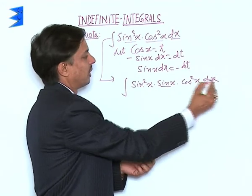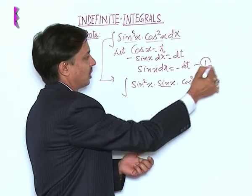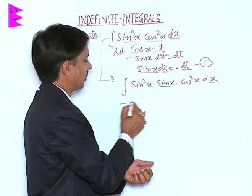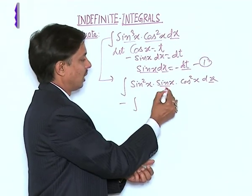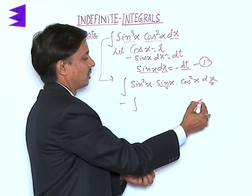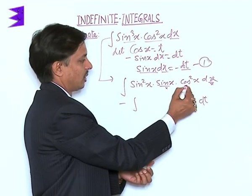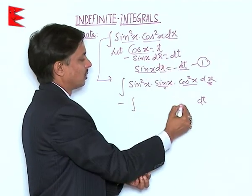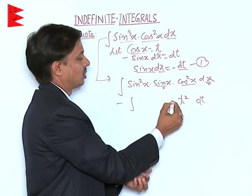This sin x and dx from this relation sin x·dx can be written as minus dt. Minus is out and in place of sin x dx we can write dt. Cos²x as cos x is t so it can be assumed as t².